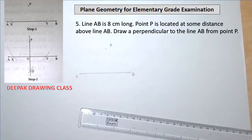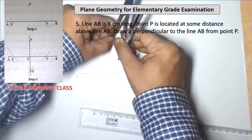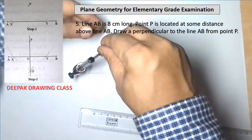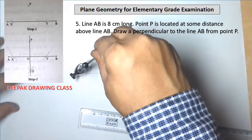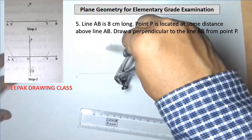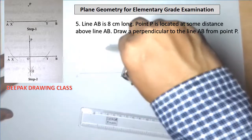Then take a compass and with P as center and a convenient radius, draw an arc to intersect line AB at the points X and Y, as shown in the given diagram.